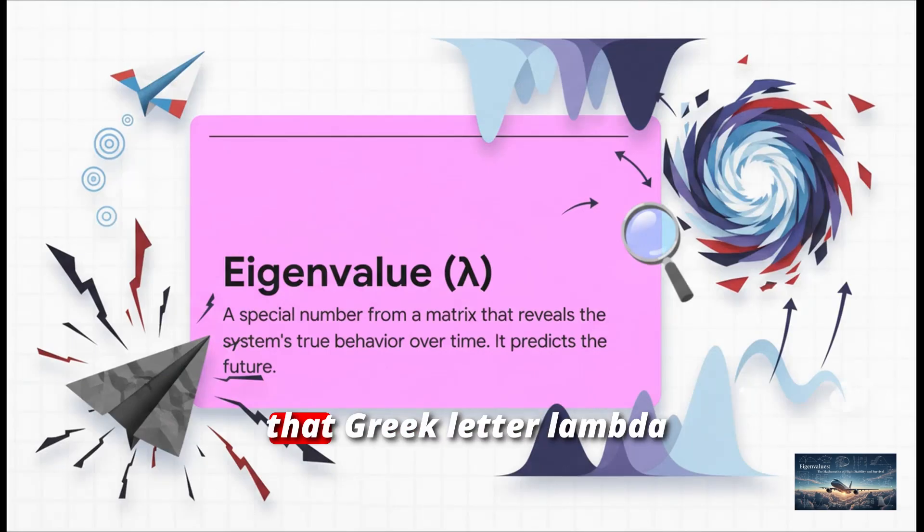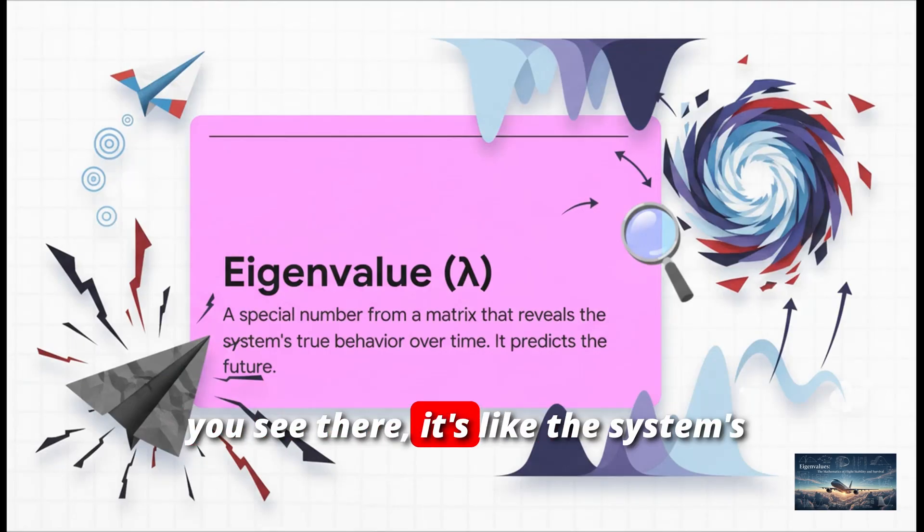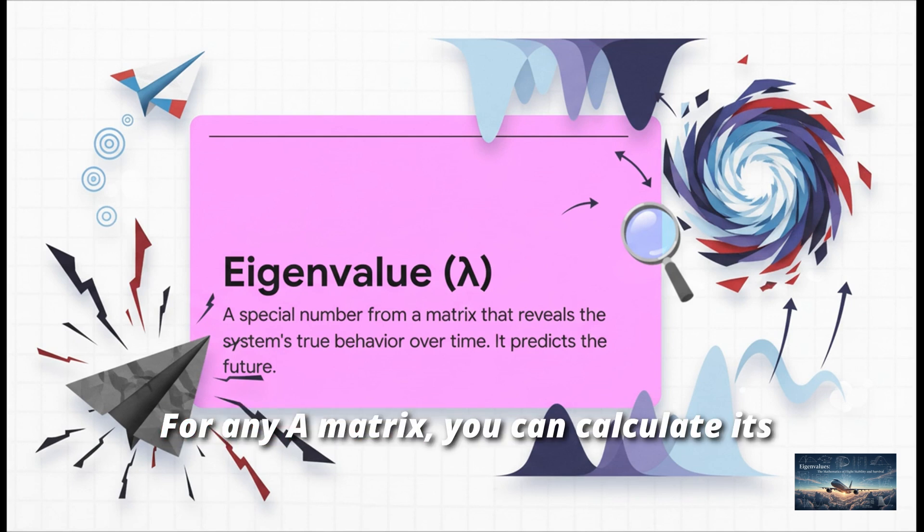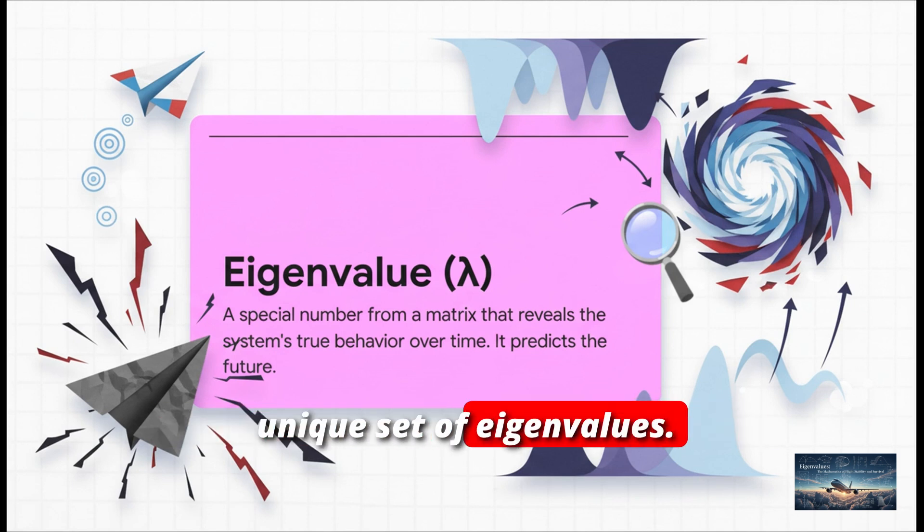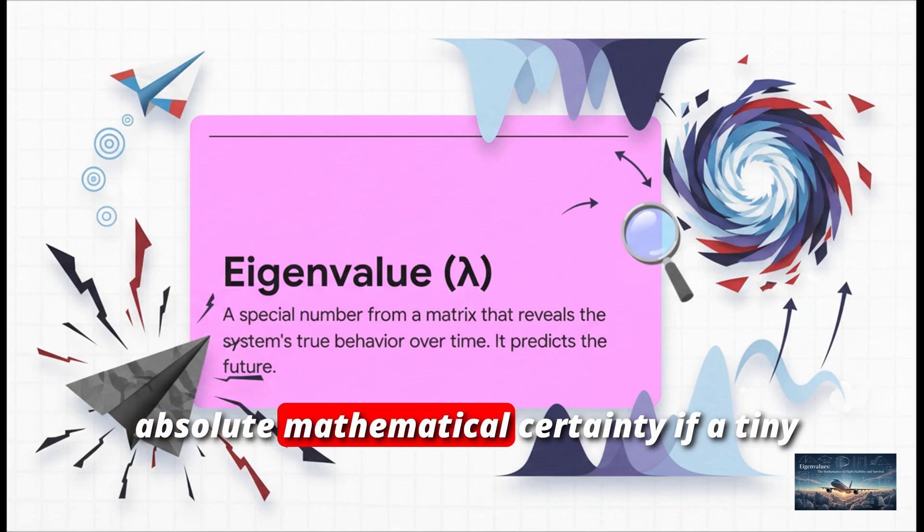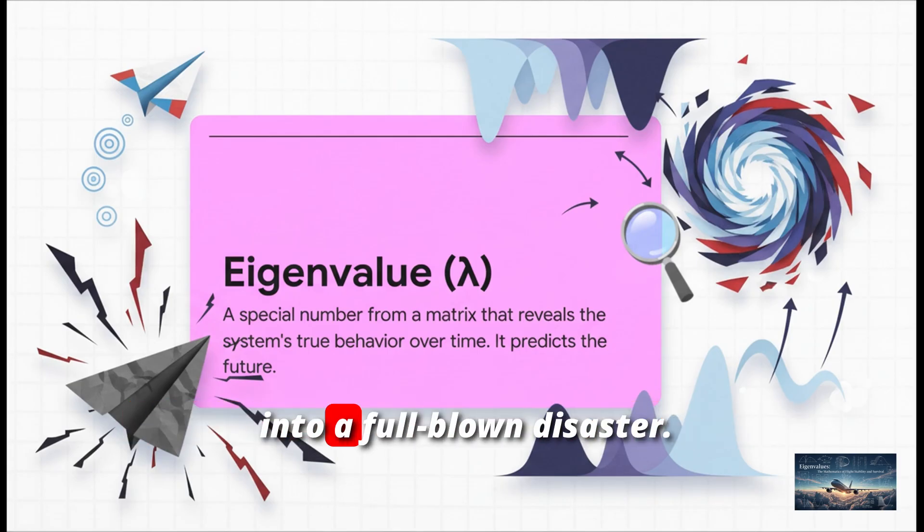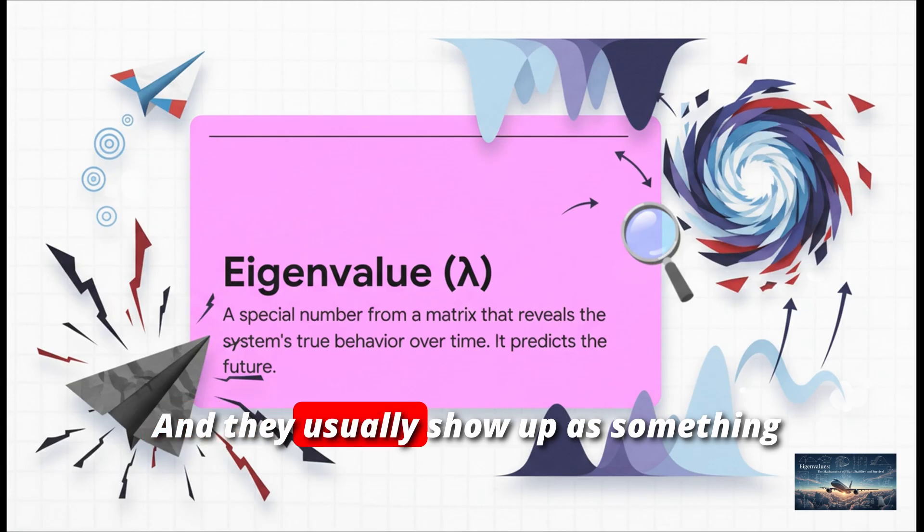An eigenvalue, that Greek letter lambda you see there? It's like the system's destiny, all boiled down to a number. For any A matrix, you can calculate its unique set of eigenvalues. And these numbers will tell you, with absolute mathematical certainty, if a tiny little bump is going to fade away or grow into a full-blown disaster.